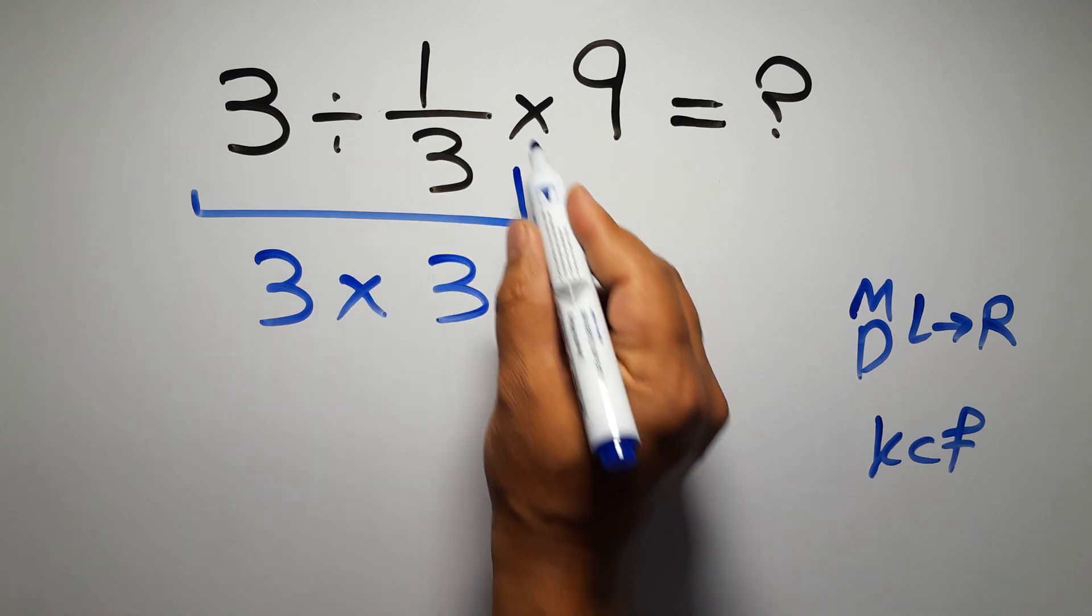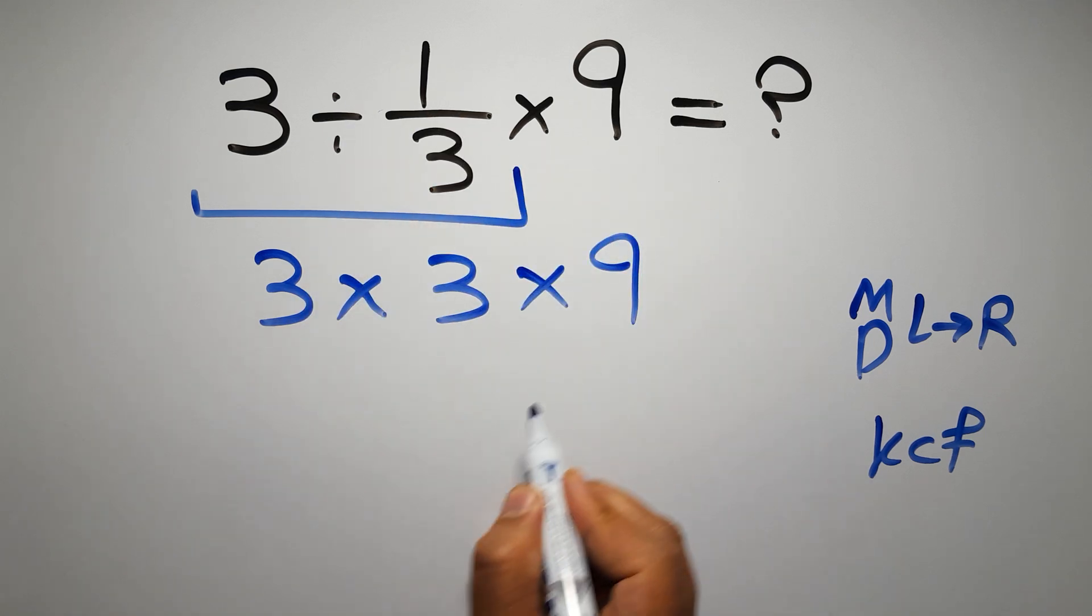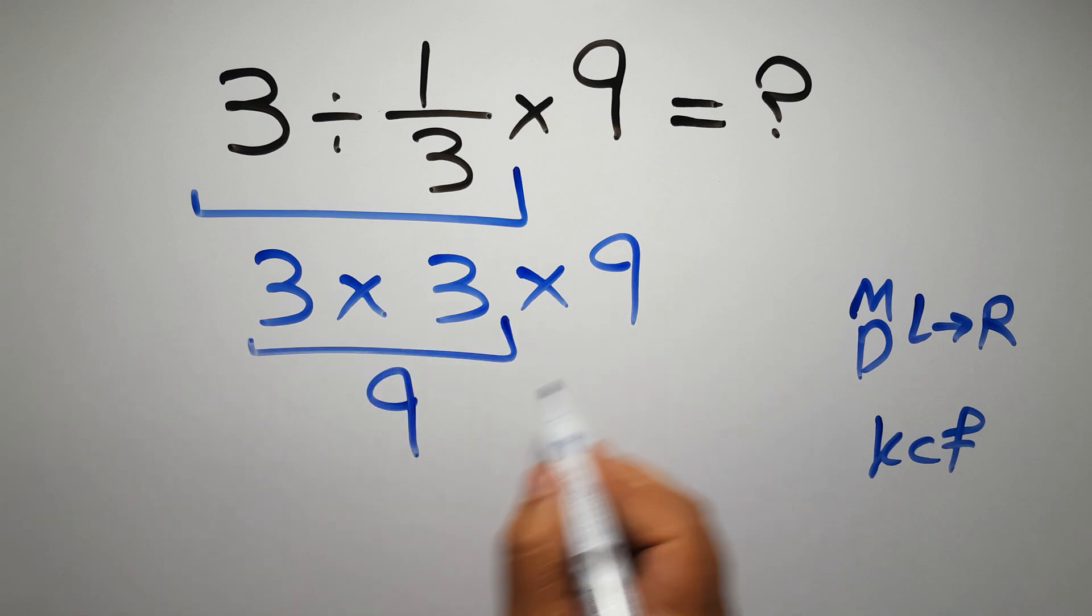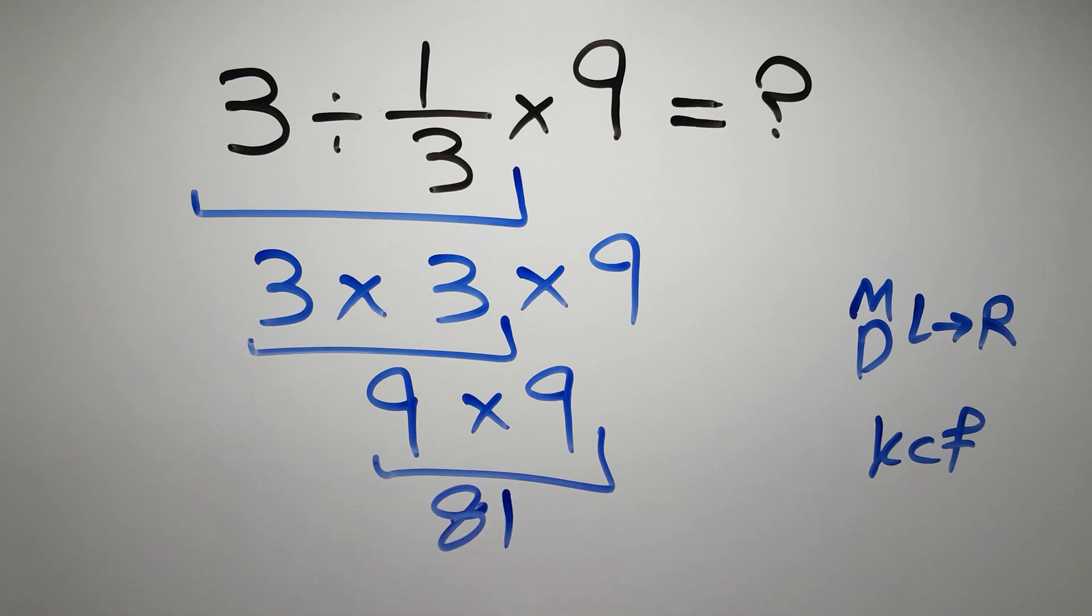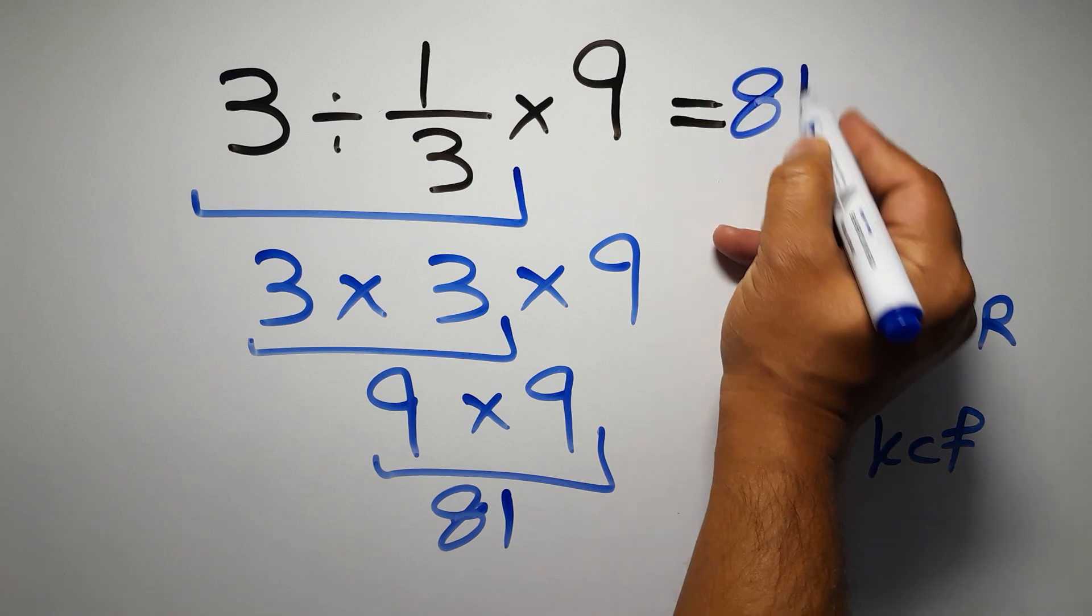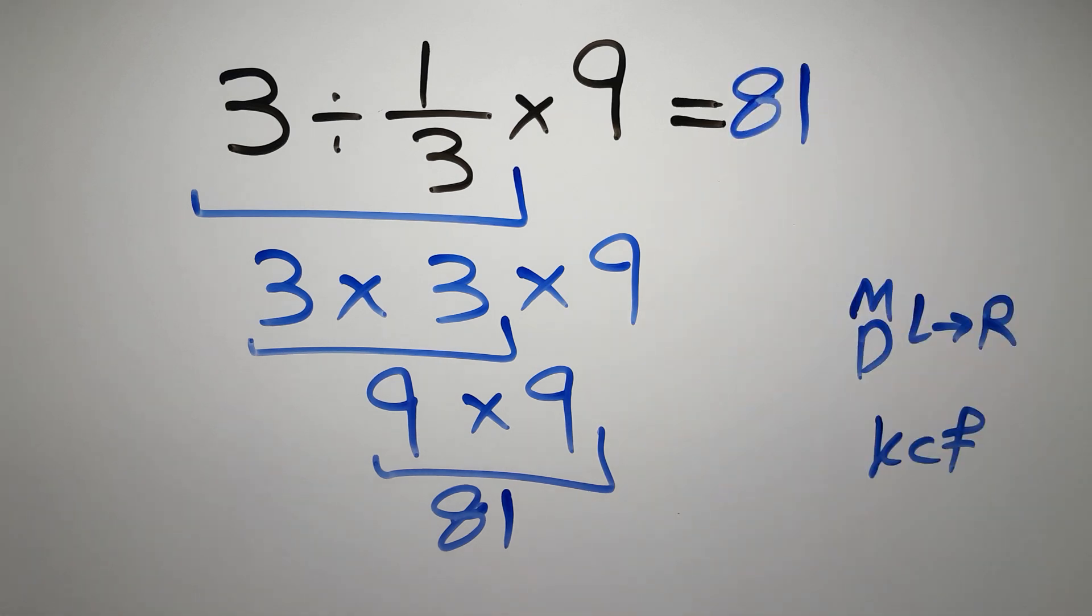And here we have times 9. 3 times 3 gives us 9, and 9 times 9 is 81. And this is our final answer to this problem. The correct answer is 81.